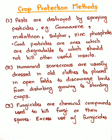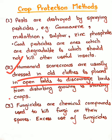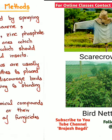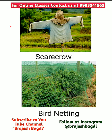The next method is the humanoid scarecrow. Scarecrows are usually dressed in old clothes and placed in open fields to discourage birds from disturbing growing and standing crops. This is the scarecrow — it is a humanoid shape placed in the field so that birds get scared and do not harm the crops.